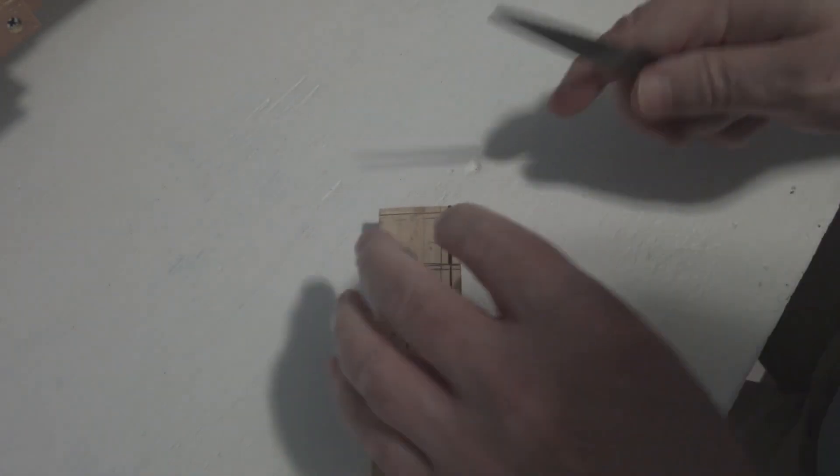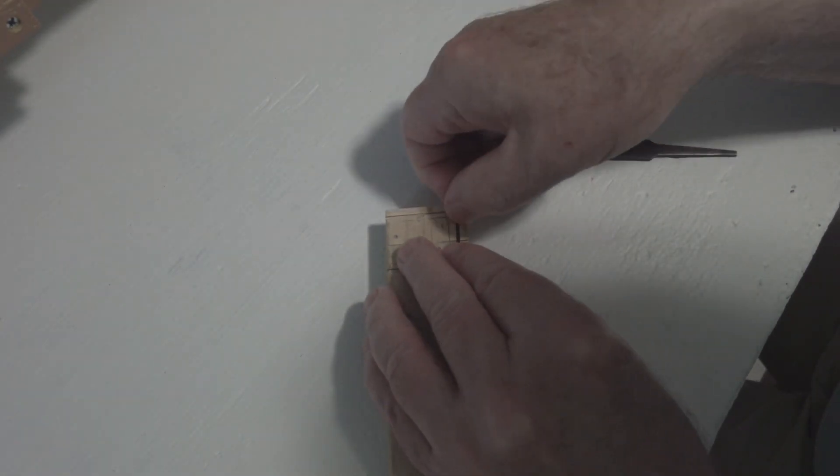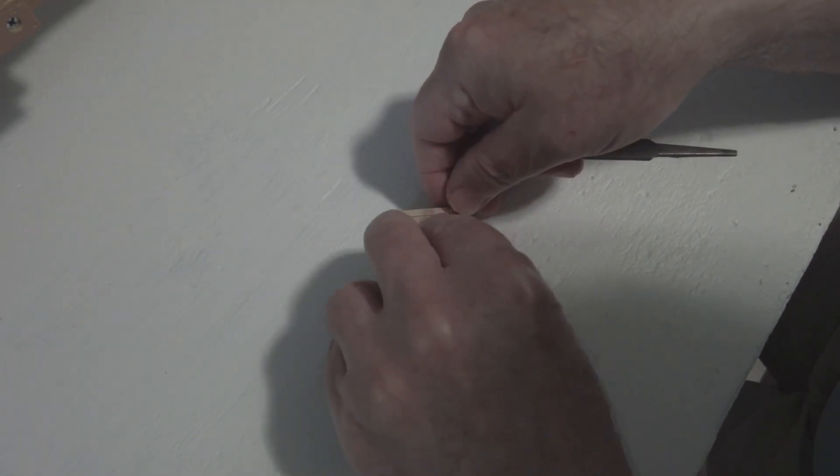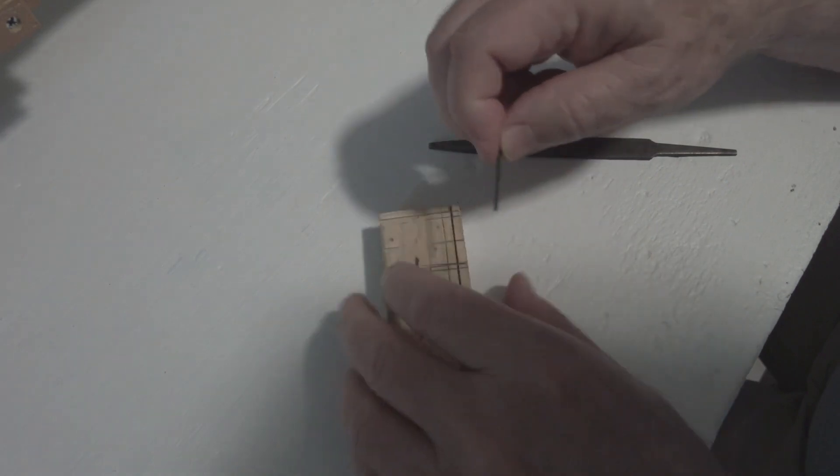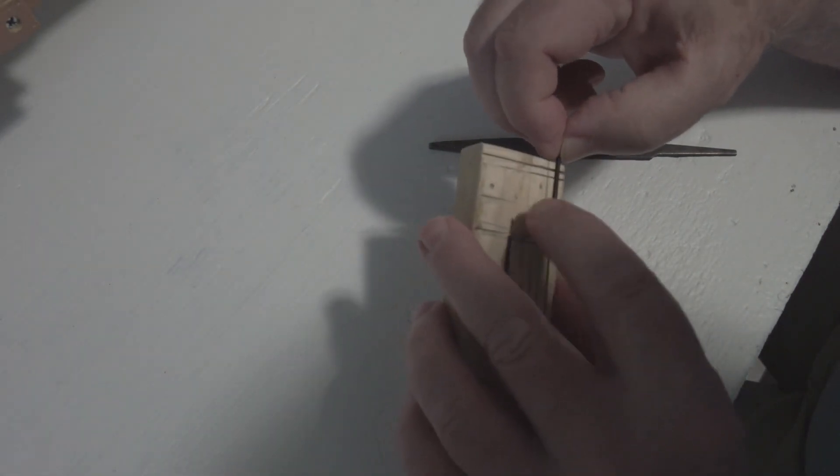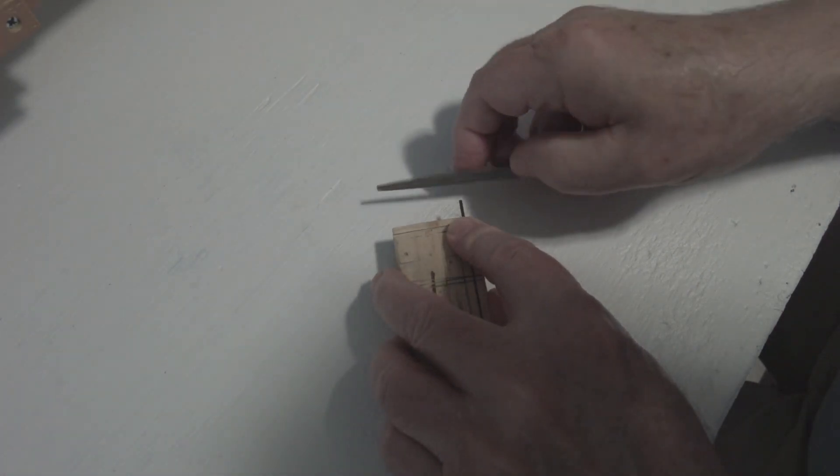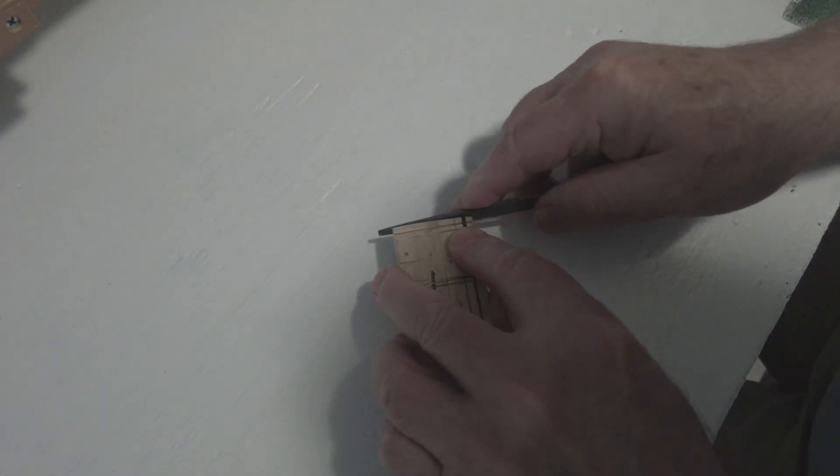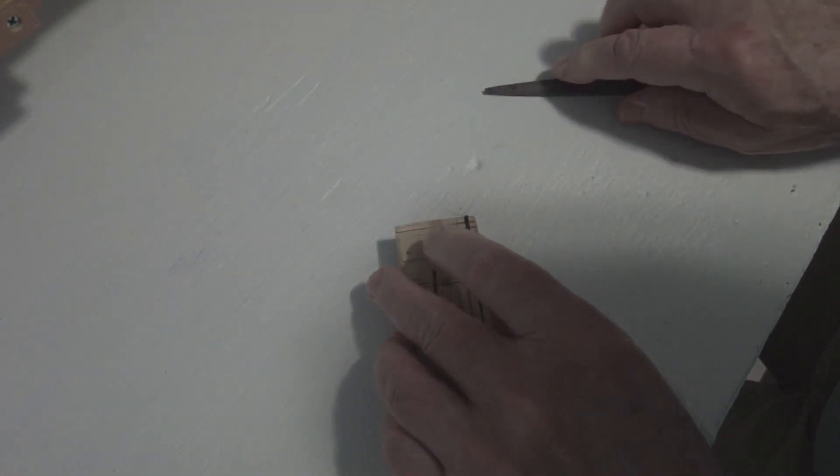Now with a small mill file I'll clean up the end a little bit. I'm going to turn it around and clean up the other end.